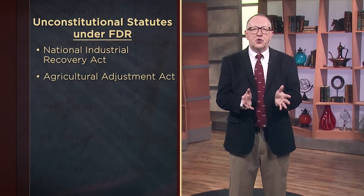So in a series of decisions, the Supreme Court held that many of the new federal statutes enacted by Congress pursuant to FDR's plan were unconstitutional, often due to the limited scope of the Commerce Clause. Among the statutes held unconstitutional were the National Industrial Recovery Act, the Agricultural Adjustment Act, the Bituminous Coal Conservation Act, and the Municipal Bankruptcy Act.